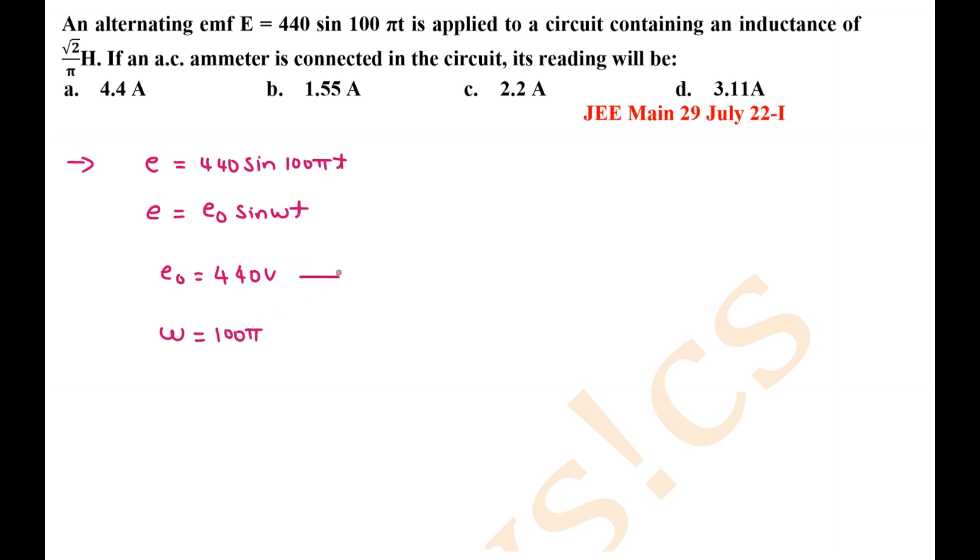From this E0 we can find the root mean square value. What is the formula for root mean square? E0 divided by √2, which is equal to 440 divided by √2, is the root mean square value of voltage.